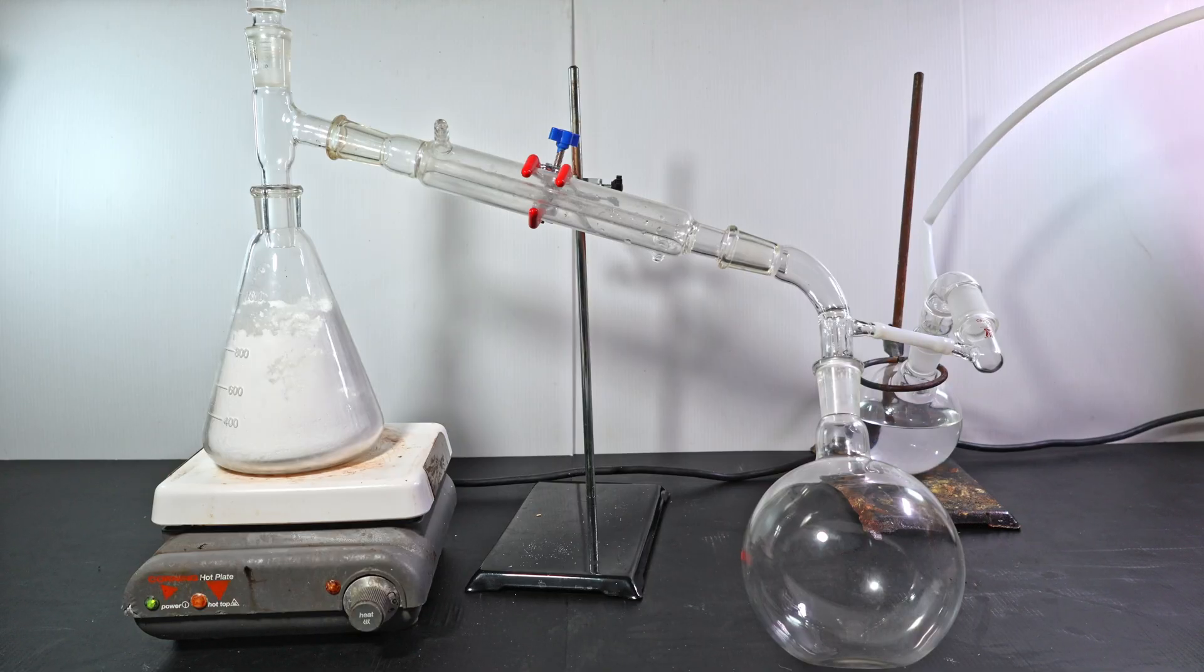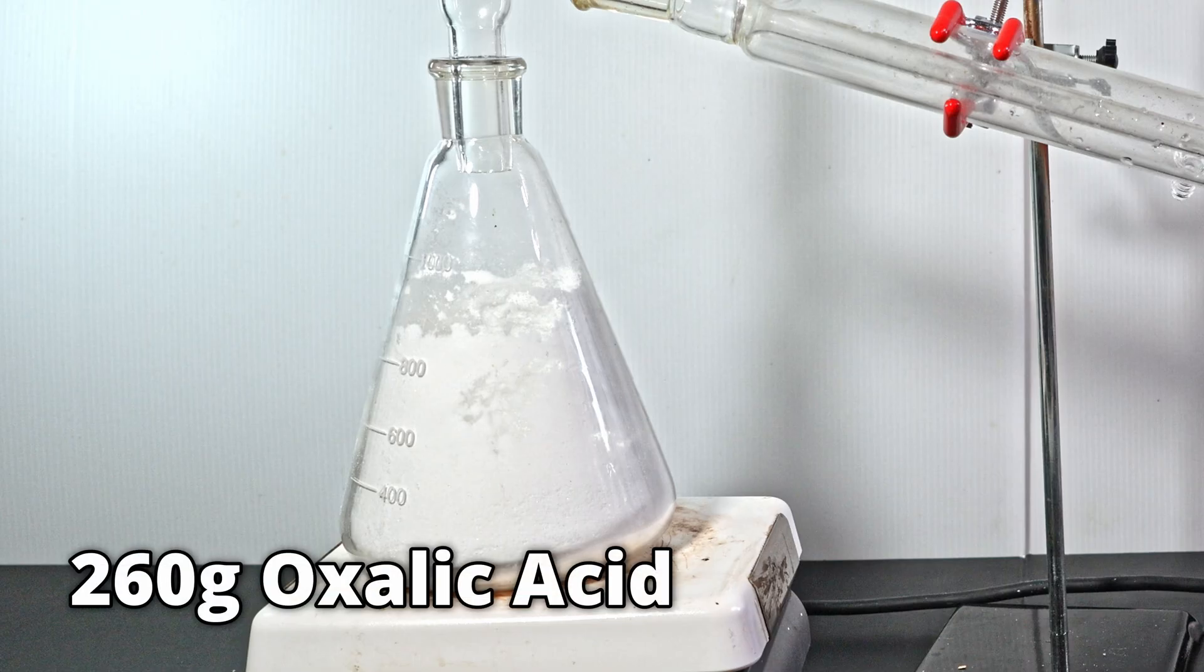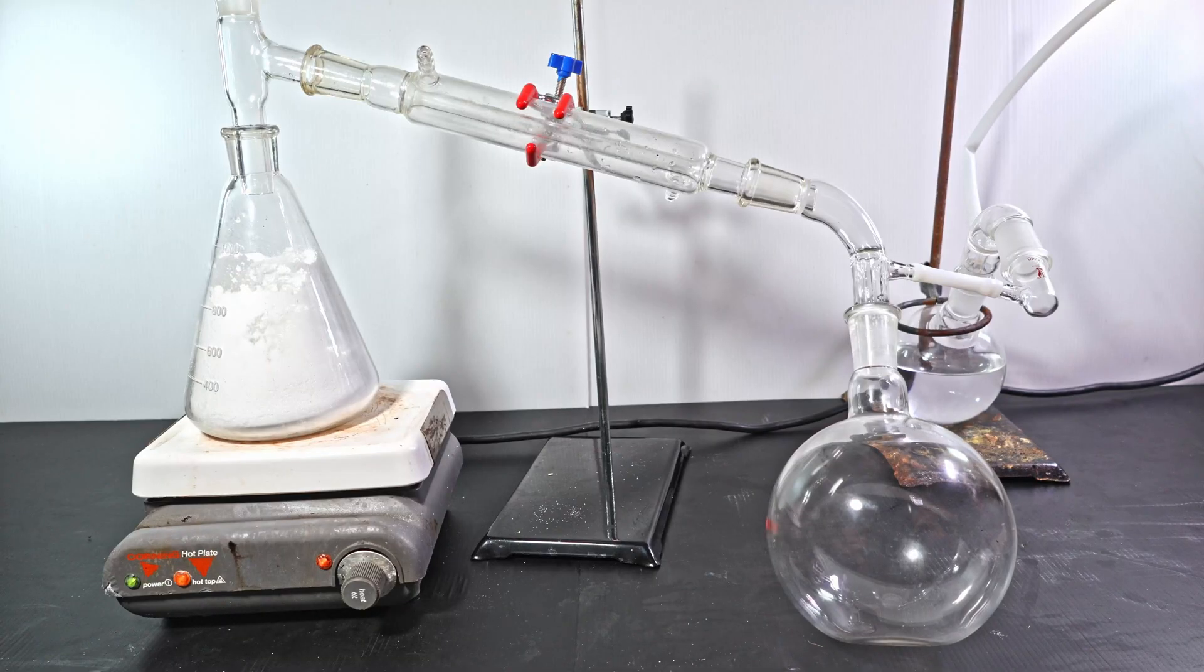For my next trick, I try to dehydrate the oxalic acid by vacuum. Contrary to what you see, I promise you it is not filled up, not even a tenth of the way. I've actually spread around 260 grams of oxalic acid around the walls of the flask. I heat it up to 130°C and turn on the vacuum.